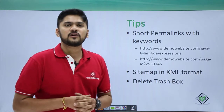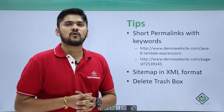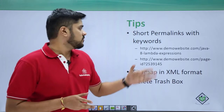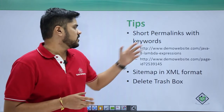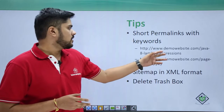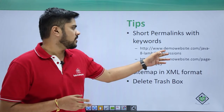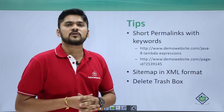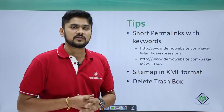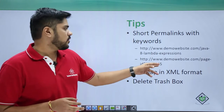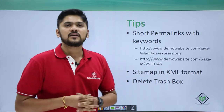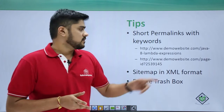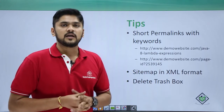The next point is short permalinks. Always try to use permalinks which are short and which should also have keywords. For example, use keywords like 'java-8-lambda-expressions' for a post about lambda expressions. Try to avoid the page ID format, as those links don't rank well on search engines, while the keyword-based format will easily rank.